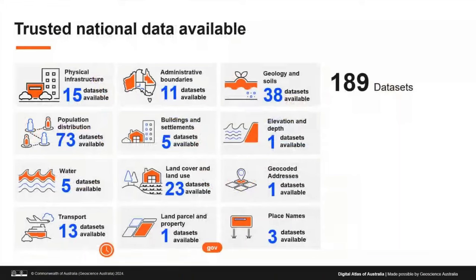The Digital Atlas groups data by theme to help users find and access information. The themes are aligned with the United Nations Global Geospatial Data Framework, which covers 14 themes used to underpin decision making. We have a range of data custodians integrating their data into the Digital Atlas from across federal government, with just under 200 datasets available.